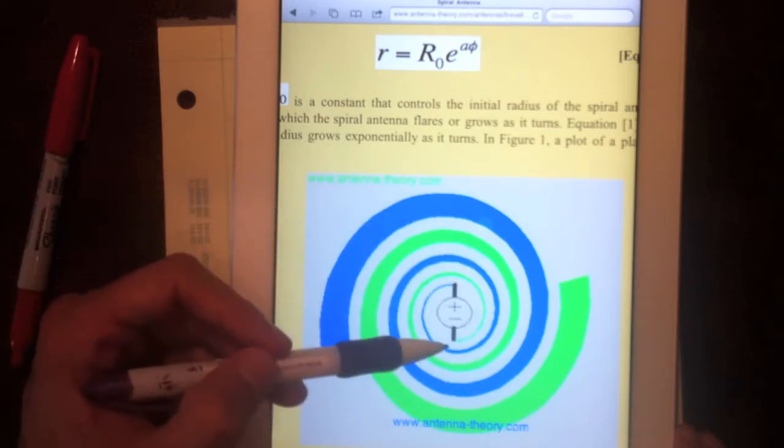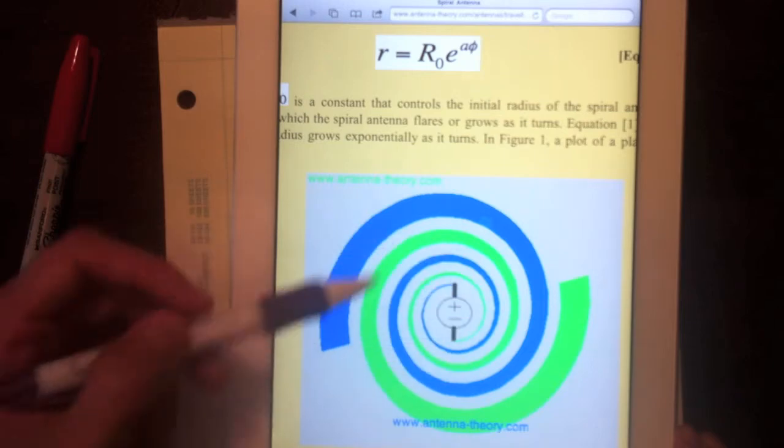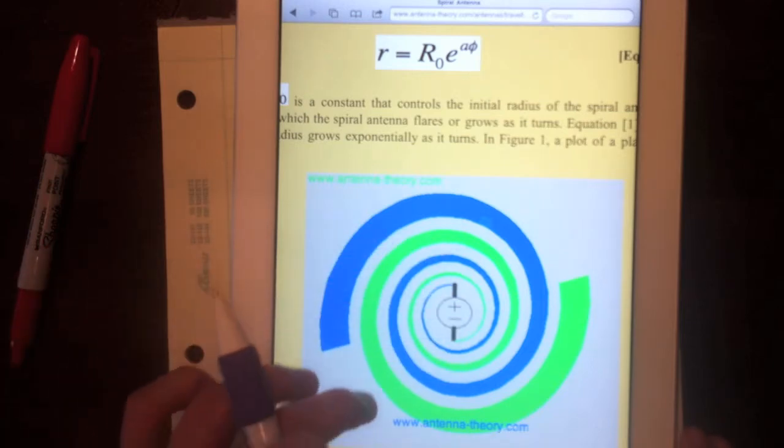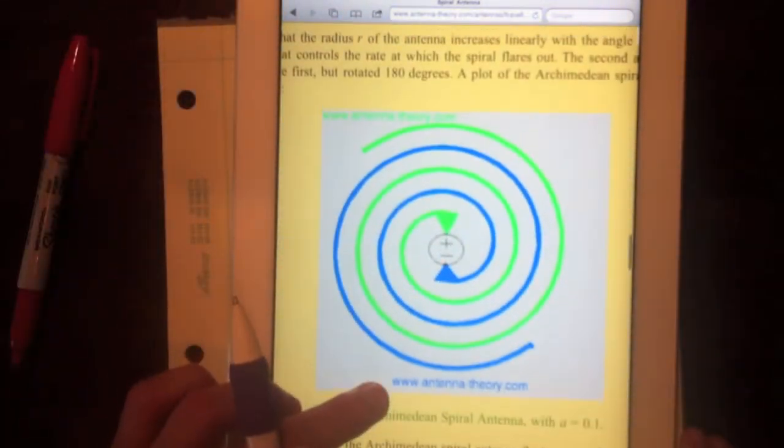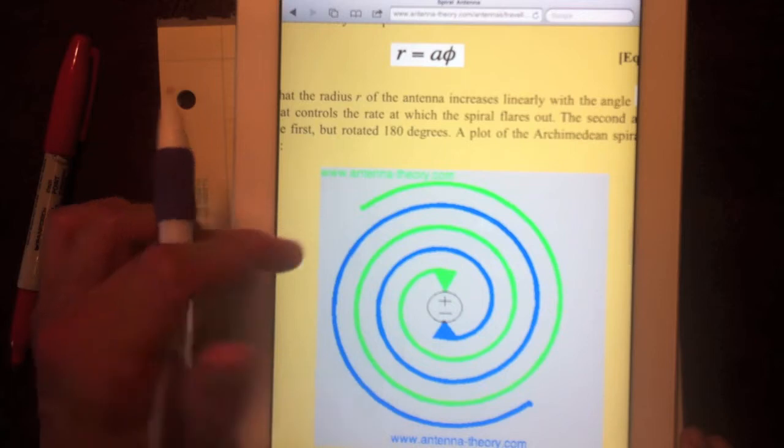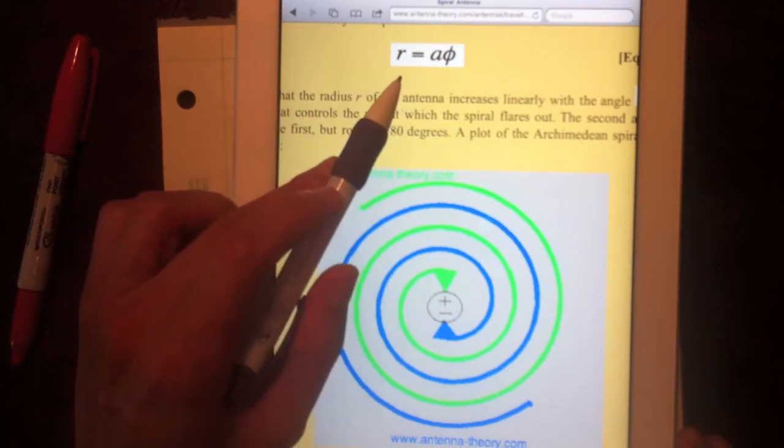Another common spiral antenna is this Archimedean spiral. This one has a radius that grows linearly with phase. A is a parameter that determines how quickly it grows. For instance, here it's just increasing at the same rate as you go out.